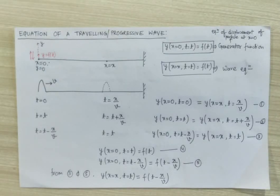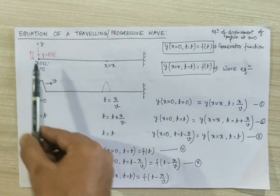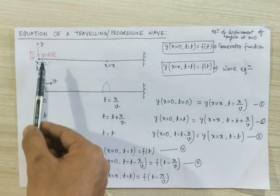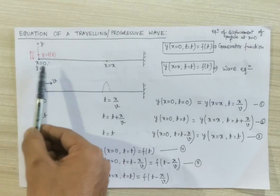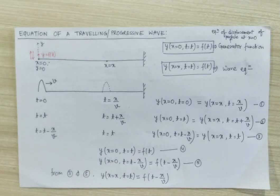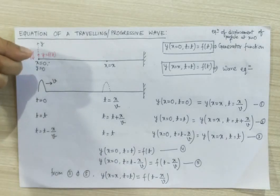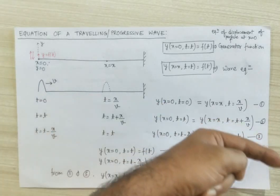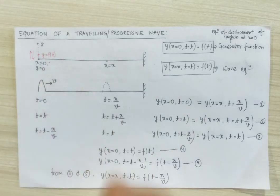Now we will see the equation of a traveling or progressive wave. Consider a string whose right end is fixed and whose left end is free. Take the left end of the string as the origin, and along the direction of the string take the positive x direction. I am holding the free end of the string and moving my hand up and down, so a pulse will generate on the string and this pulse will move with a constant speed along the direction of the string, from left to right, because the string is homogeneous and elastic.